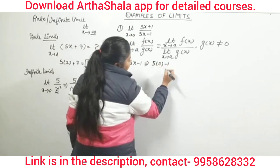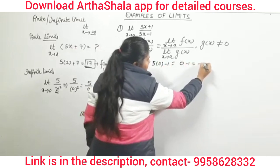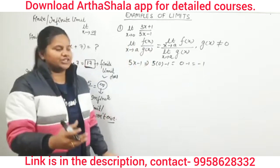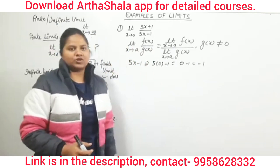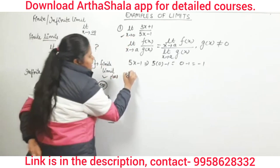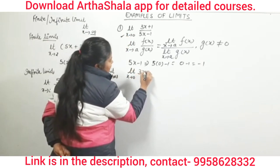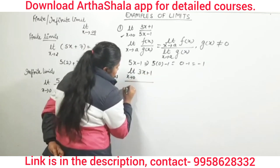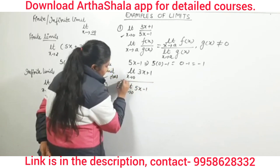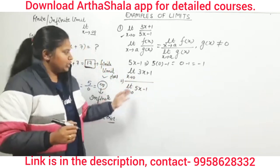For the quotient rule, we apply limits in the numerator and the denominator separately, with the condition that the denominator is not equal to 0. So first we check: if we put the limit value in the denominator, is it 0? Our denominator is 5x − 1. We put x = 0 because limit x tends to 0, giving us 5(0) − 1 = −1. So the denominator condition is satisfied.